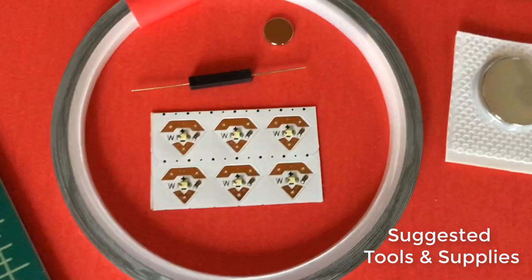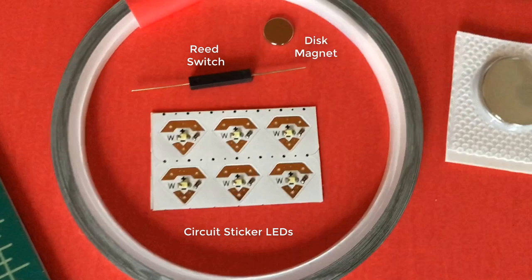To get started you'll need the following tools and supplies: a reed switch, two circuit sticker LEDs, a disc magnet, conductive fabric tape, and a coin cell battery.